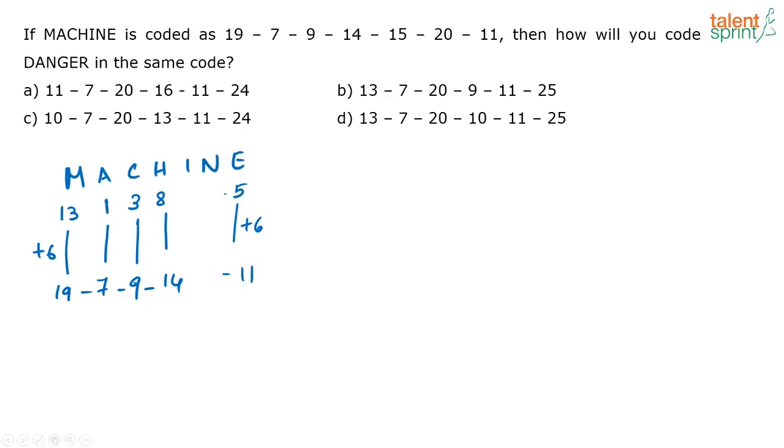And that is what you get as the code. This will be 11. Similarly, you have to do the same for danger. D, A, N, G, E, R. What is the position of D? Position of D is 4. So, 4 plus 6. That's going to give you 10. Directly take this as the answer. Don't waste your time finding out everything. If you look at the options, these two options are starting with 13 and this option is starting with 11.